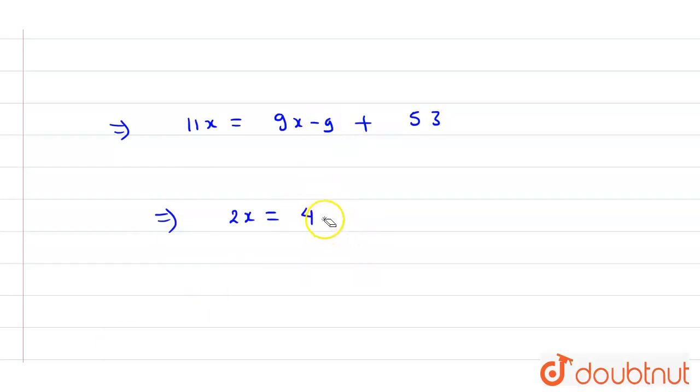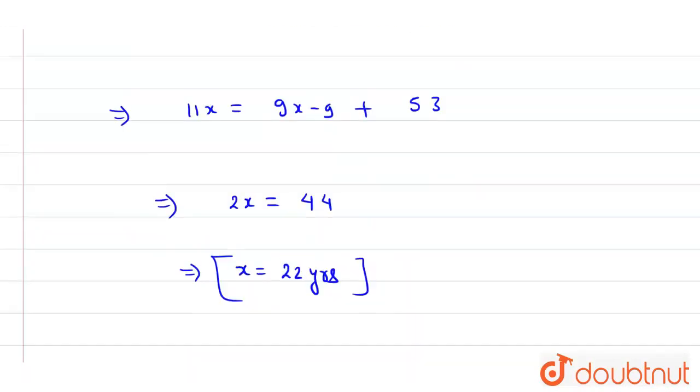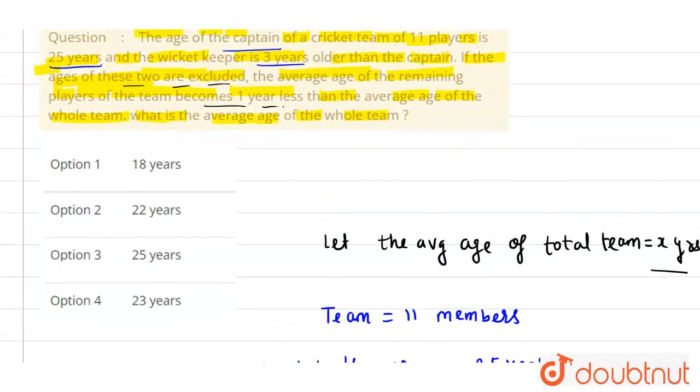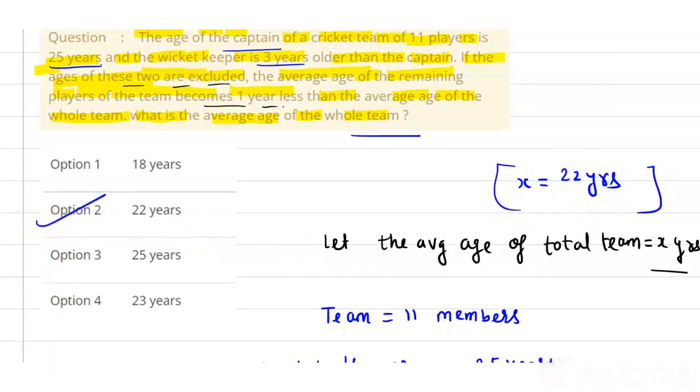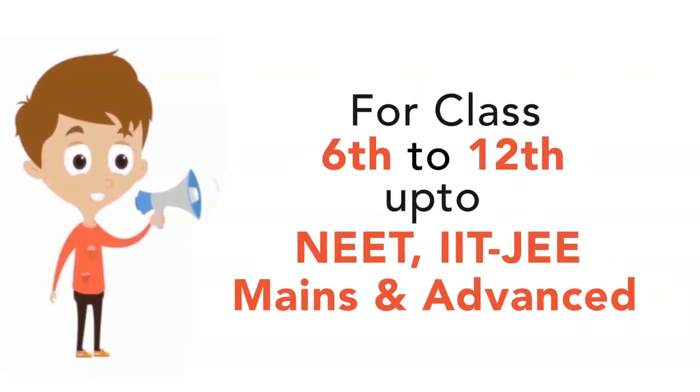So x equals 22. Therefore 22 years is the average age of the whole team. Option 2 is correct.